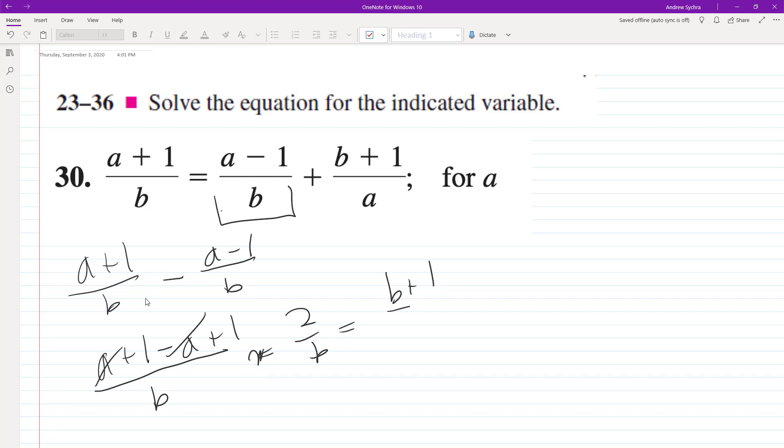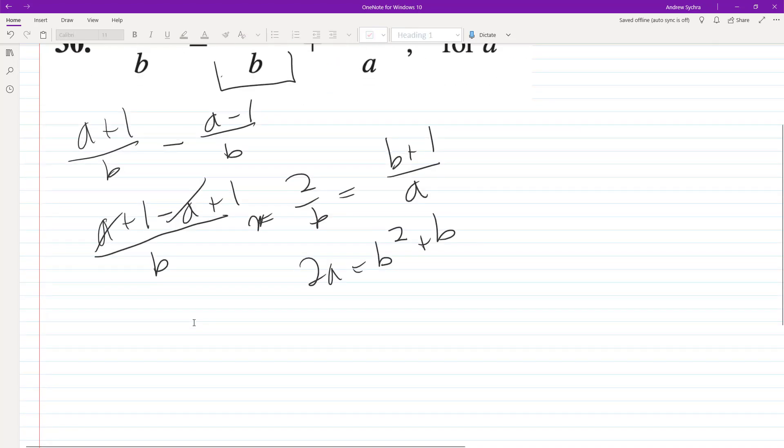We can cross multiply: 2a is equal to b squared plus b. Then divide by 2 and we get a is equal to b squared plus b, all over 2.